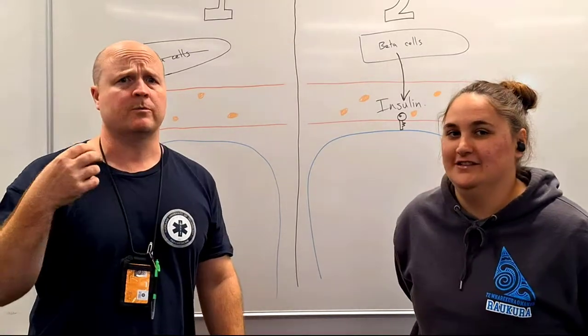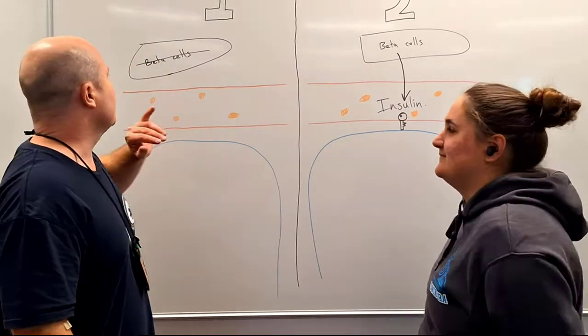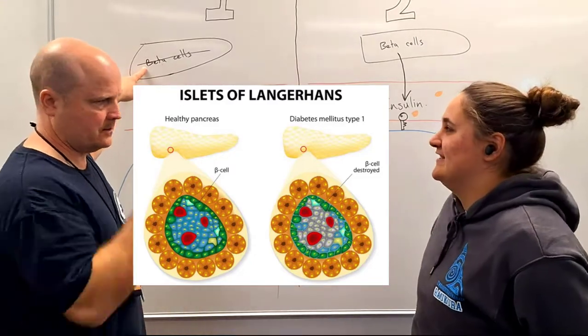It could be surgery, could be trauma, could be infection, and then we get an autoimmune reaction. And what do we break down? Beta cells. In our? Pancreas.